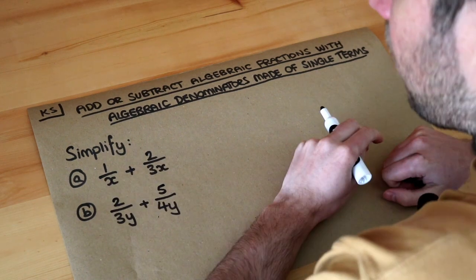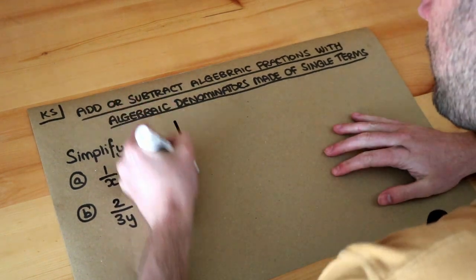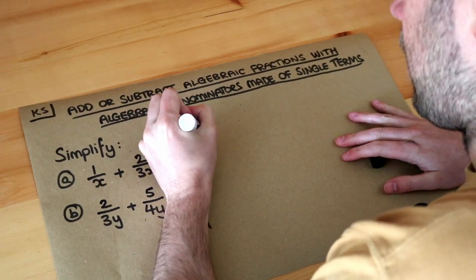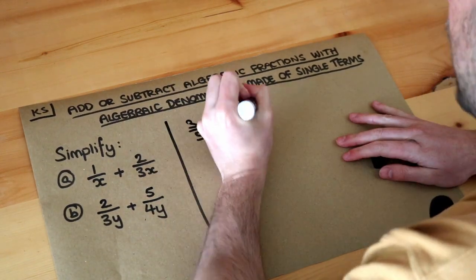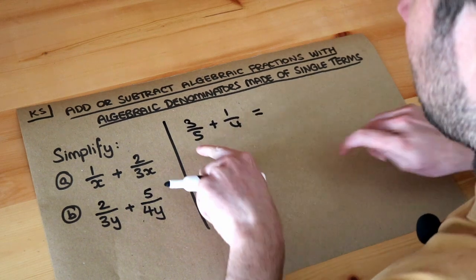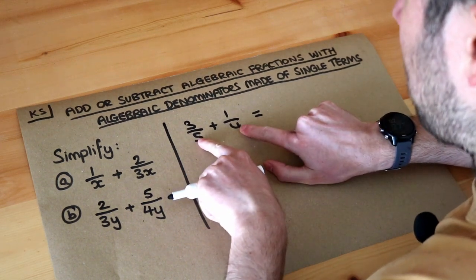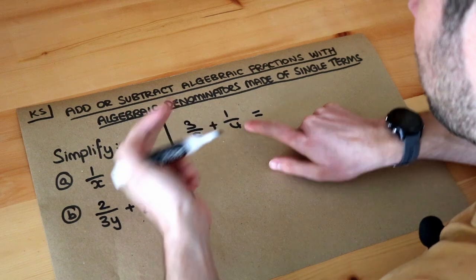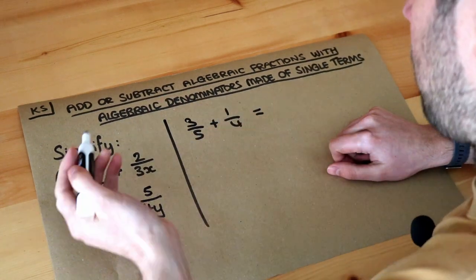Now let's remember how we add fractions in general. If I do three-fifths plus a quarter, to add these you need a common denominator so these have to be the same number. You scale both fractions so they have the same denominator. What do five and four both go into? They both go into 20, so you make them both over 20.